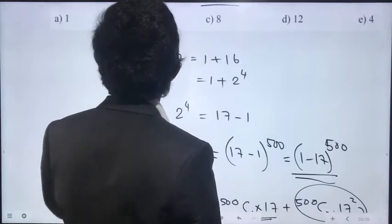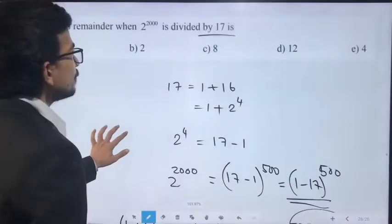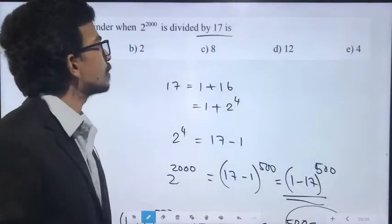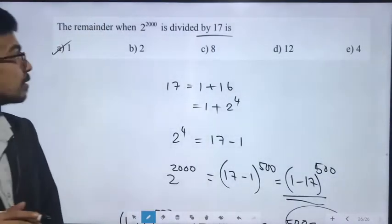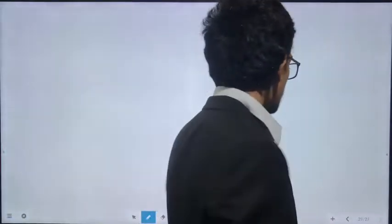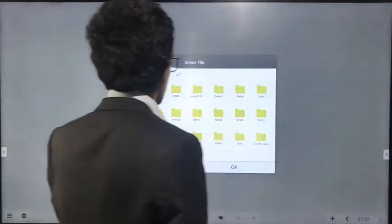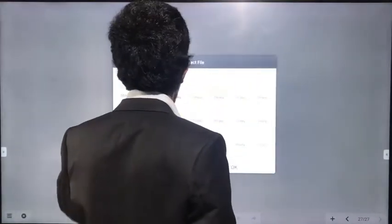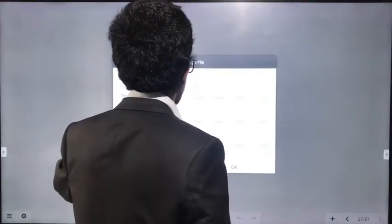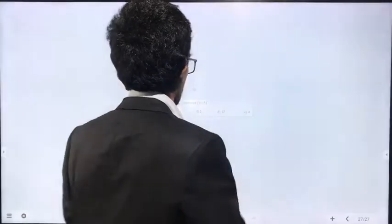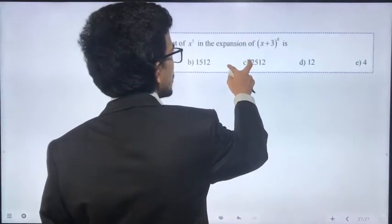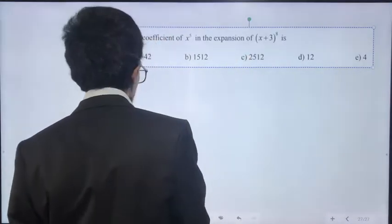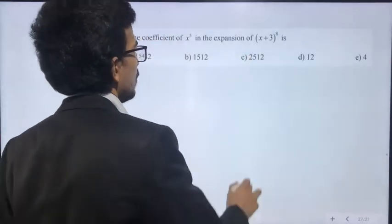So 1 is the answer. Question 67: the coefficient of x^5 in the expansion of (x + 3)^8 is the coefficient of x^5.